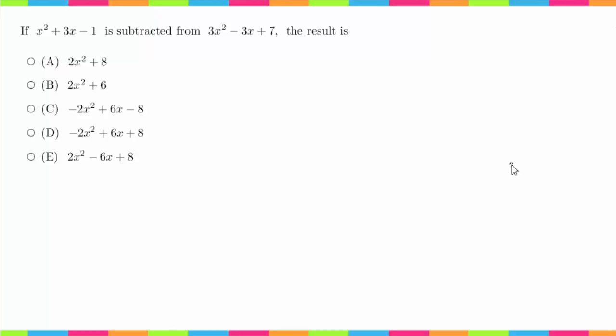In order to do this, all we are going to do is simply just subtract the like terms of the first from the second. So I'm going to start by writing out the second polynomial here, and then I'm going to subtract the first.